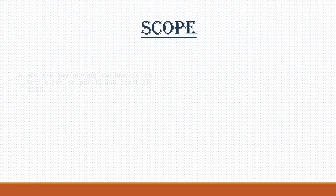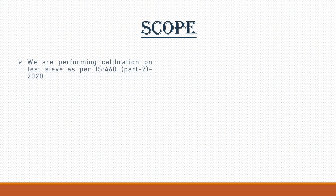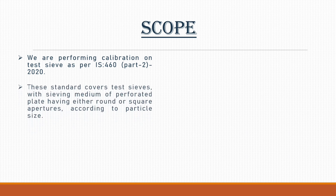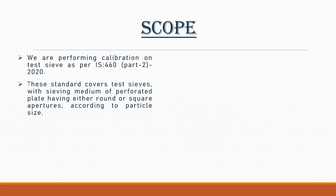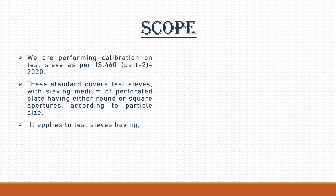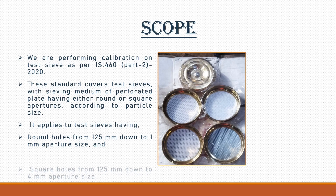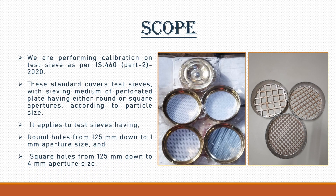Coming to our scope, we are performing calibration on test sieves as per IS-460-2-2020. This standard covers test sieves with a sieving medium of perforated plate having either round or square apertures. According to particle size, it applies to test sieves having round holes from 125 mm down to 1 mm aperture size, and square holes from 125 mm down to 4 mm aperture size.